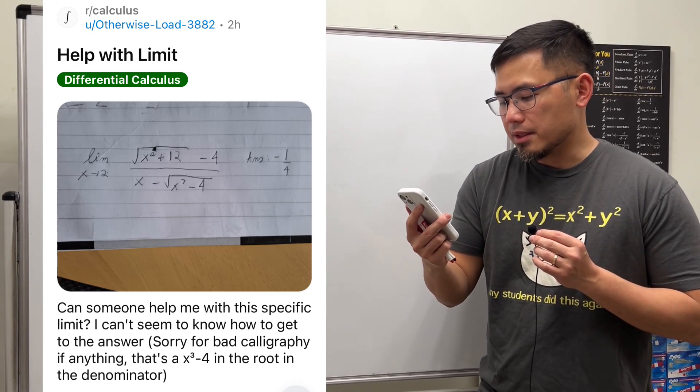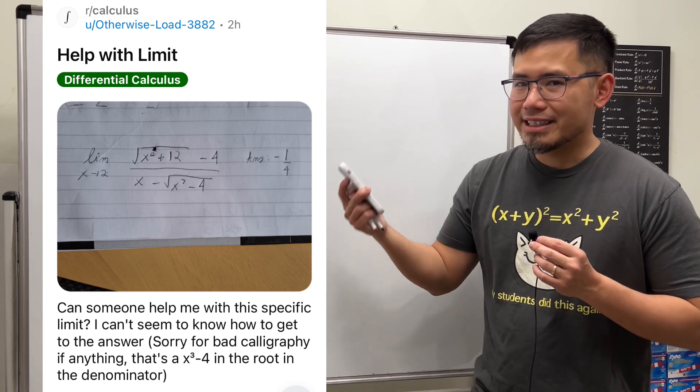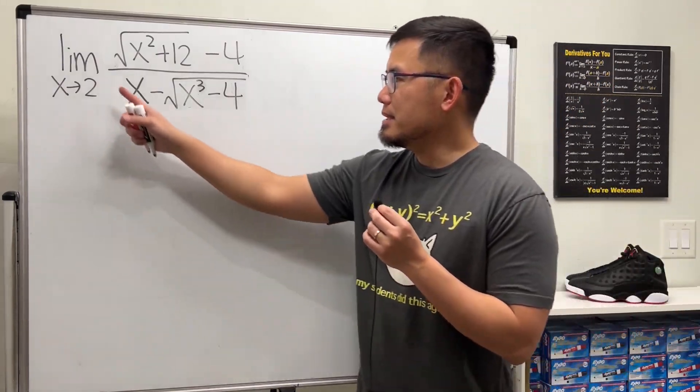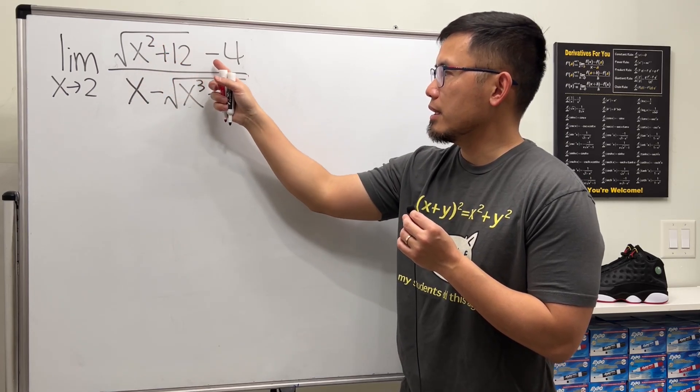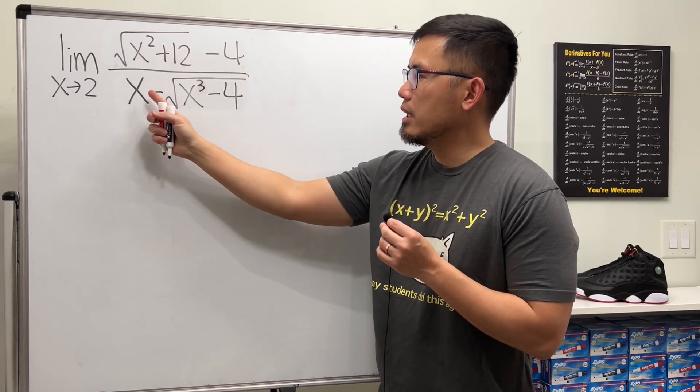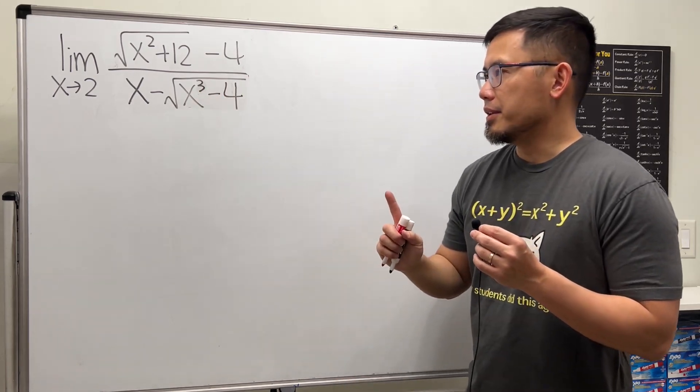Can someone help me with this specific limit? I can't seem to know how to get to the answer. Let's have a look. Here we have the limit as x approaching 2 of square root of x squared plus 12, and then minus 4 over x minus the square root of x to the third power minus 4.